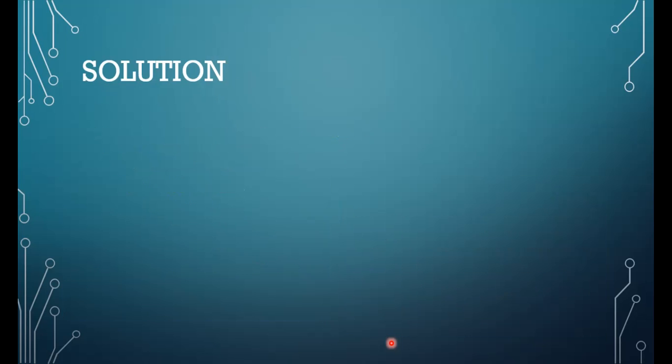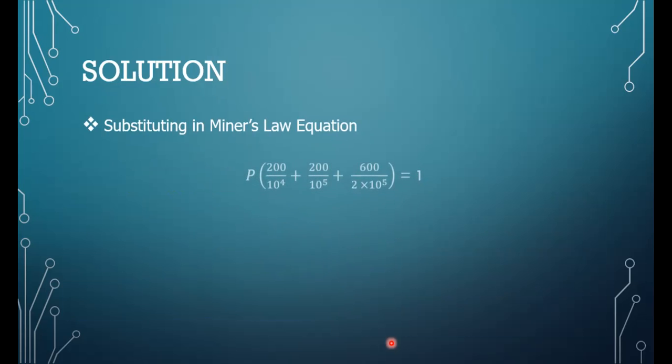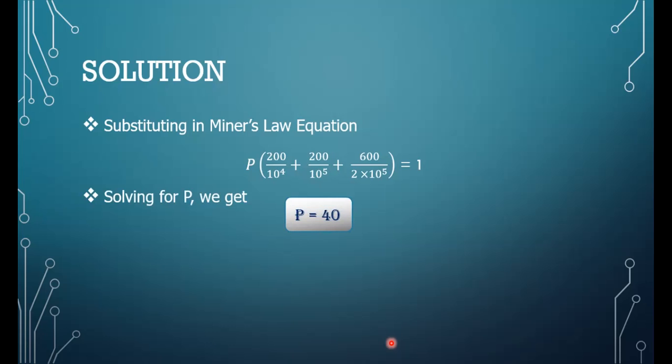We quickly move to the solution of the Miner's equation. We substitute, taking p as common from n_1, n_2, n_3, and substitute the relevant values. Solving the mathematics, you should get p equal to 40.